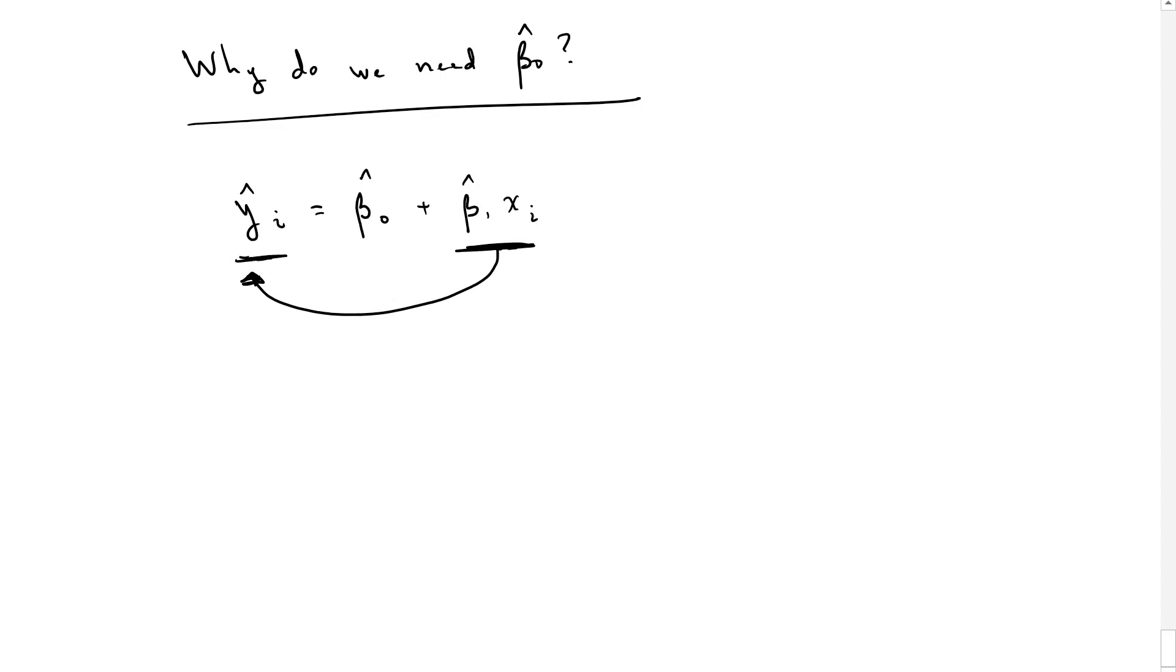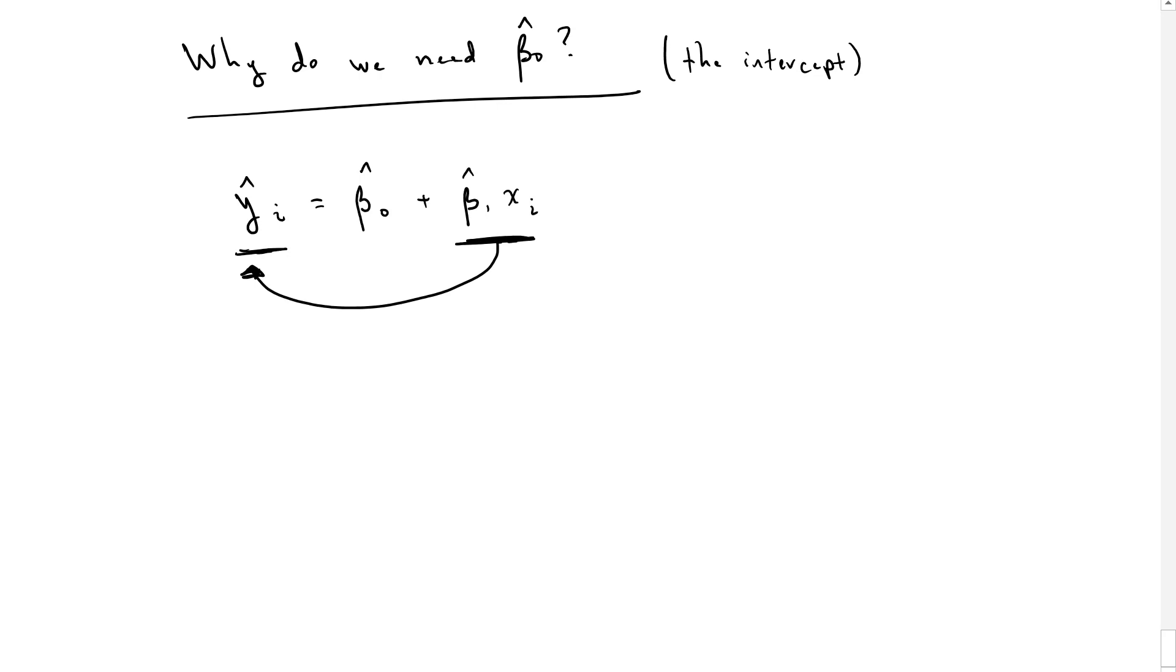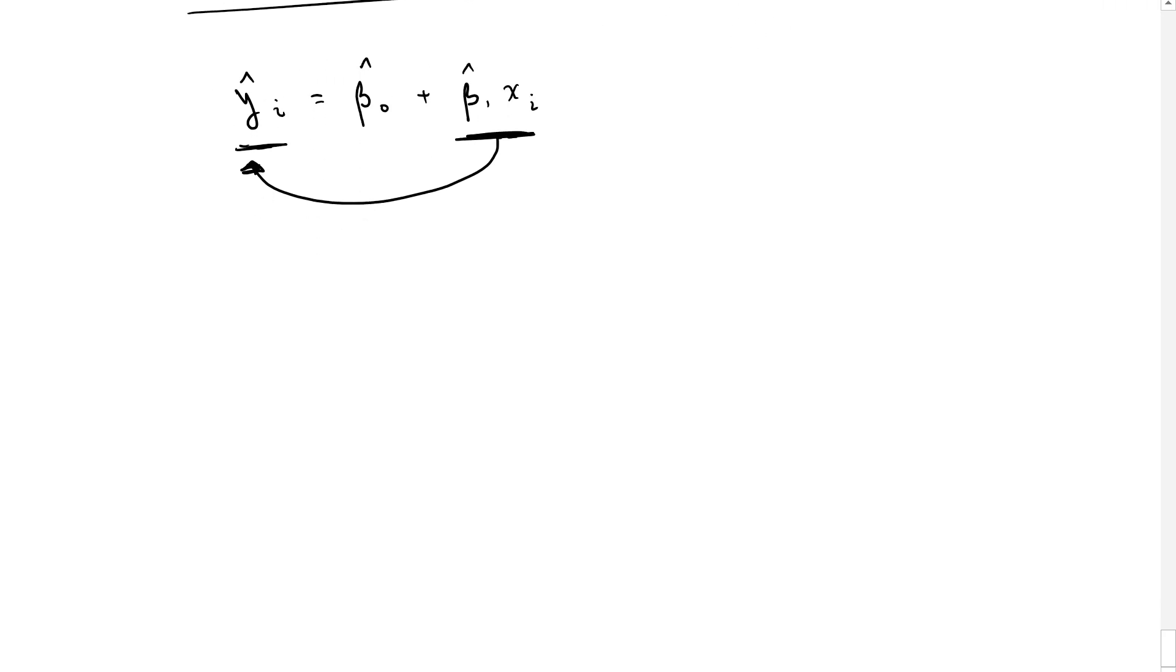And so why do we need beta zero, which is the intercept from our regression equation, sometimes called the constant as well. I'm going to show you two examples.